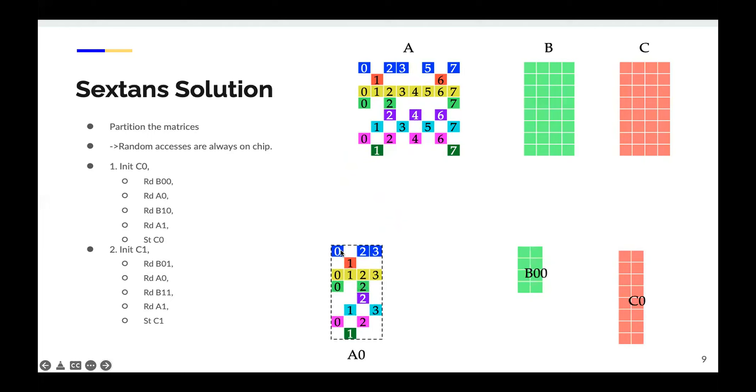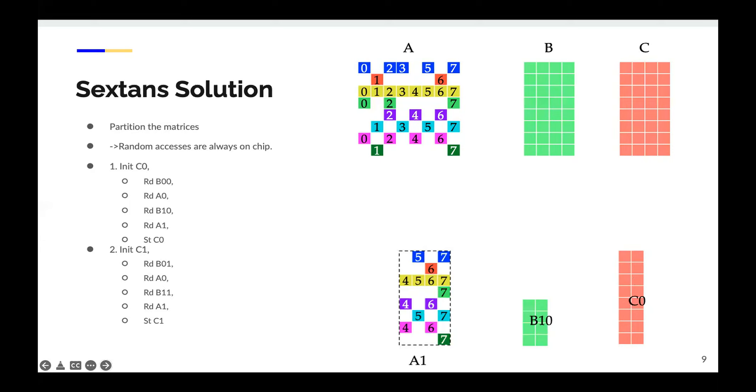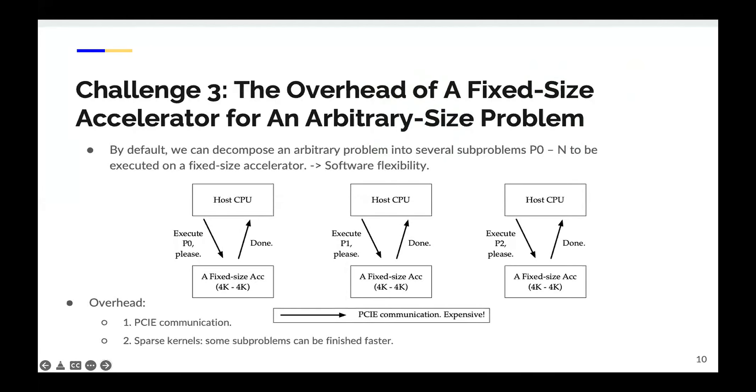For example, to compute the results for the C block, we actually need A0, A1 and the block B0,0 and B0,1. In the processing, we first initialize C0 and we load this block B0,0 from off-chip memory to on-chip memory. Then we're streaming in the A0 block, and for each element streaming from the off-chip to on-chip, we do the multiplication of the element to the B matrix and then accumulation on this C0. Next, we bring B0,1 from off-chip to on-chip memory, and then we're streaming in A1. We also do the element to matrix multiplication and accumulation on C0. After that, we store the results from the on-chip memory to off-chip.